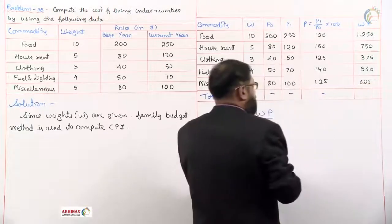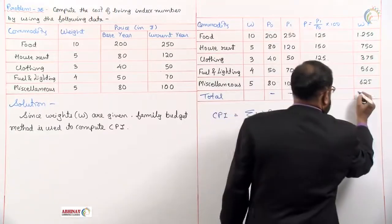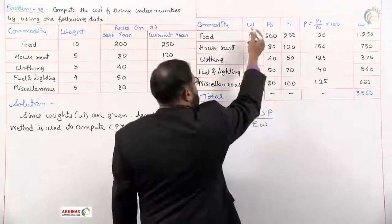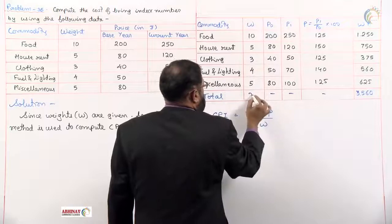And get the total. The total of this comes to 3560. We want the total of weights also, which is 27.